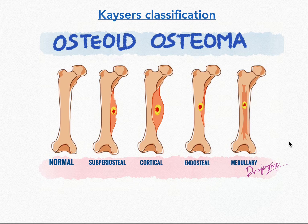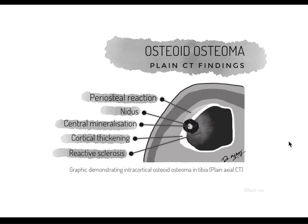The intraarticular osteoid osteoma does not produce much periosteal reaction because of the absence of the inner cambium layer in the intraarticular portion of bone — that is why we don't get much reactive bone formation. So whenever there is an intraarticular lesion, keep intraarticular osteoid osteoma in mind. This graphic representation — credit to Ajayi for the excellent depiction — shows the nidus, central mineralization, cortical thickening, adjacent sclerosis, and extension towards the medullary cavity, all of which were present in our case.